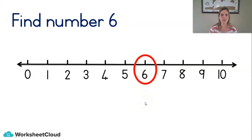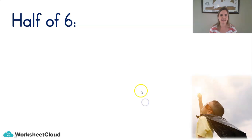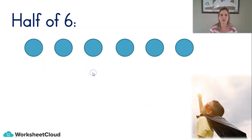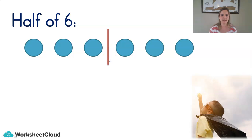Let's learn some more things about the number six. What is half of six? Here we've got six dots — maybe six smarties — and we want to share them in half. We chop it in half. How many on one side? Three. So now we know half of six is three.